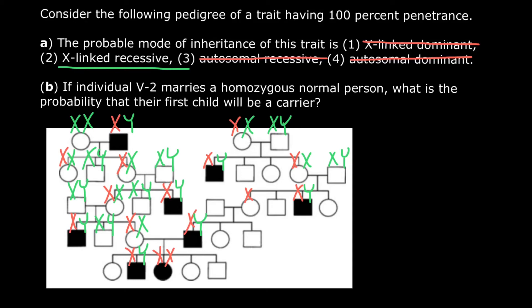When she marries a phenotypically normal male, their affected boy got the defective X from the mother and the normal Y from the father. You can see the pattern — X-linked recessive explains why this disorder skips generations. Girls are normally unaffected unless the father is affected and the mother is heterozygous, in which case we would also see affected girls in the family.